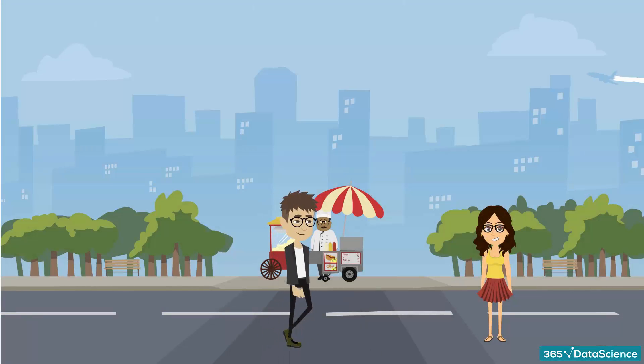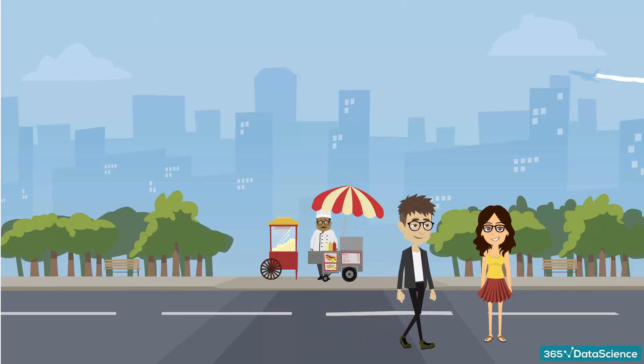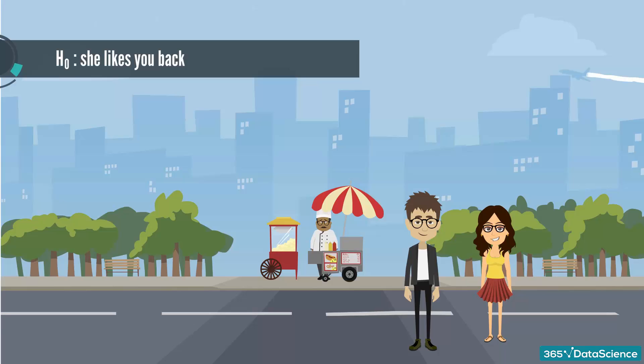Now, imagine another situation. She doesn't like you back, but you go and invite her out. The null hypothesis is still she likes you back, but this time it is false.